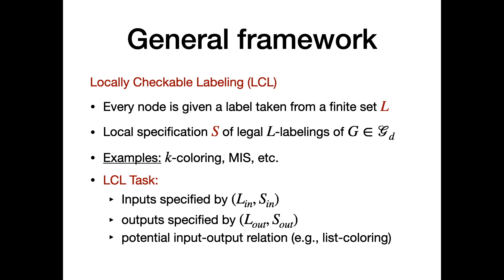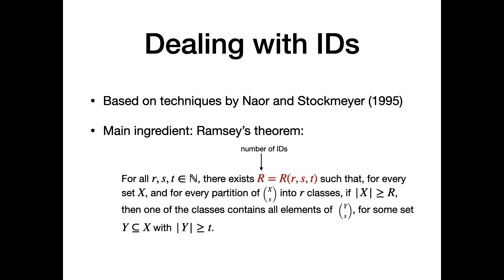Regarding IDs: we use essentially the same technique as Naor and Stockmeyer, whose main ingredient is Ramsey's theorem. There is a Ramsey value R depending on various parameters, and this R enables us to discuss a constant number of IDs instead of IDs depending on the number of processes.